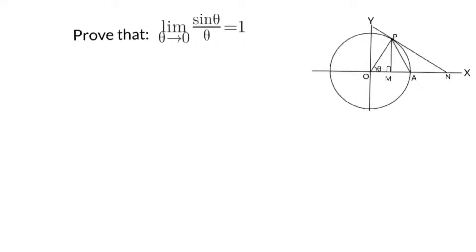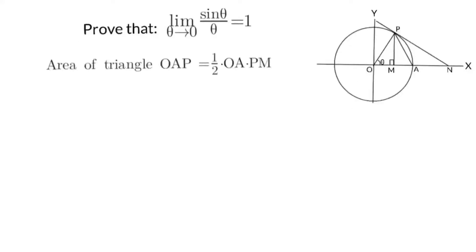With the help of this figure we are going to prove that limit theta tends to 0, sin theta over theta is equal to 1. First of all, we are going to find out the area of triangle OAP. The area of a triangle is given by half base into height, so area of triangle OAP equals one half times OA times PM, where OA is the base and PM is the height.